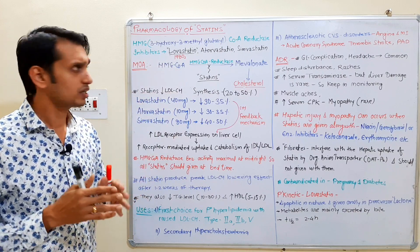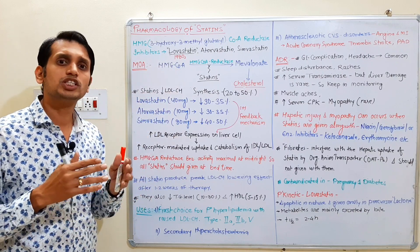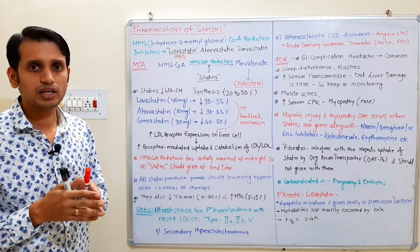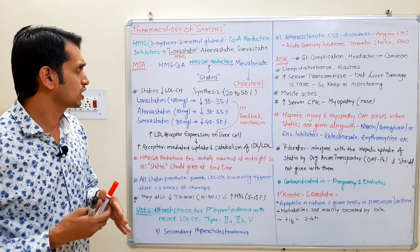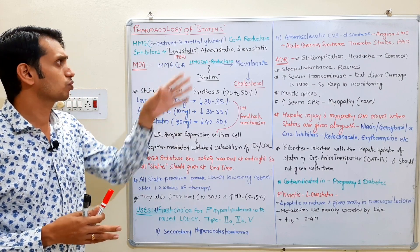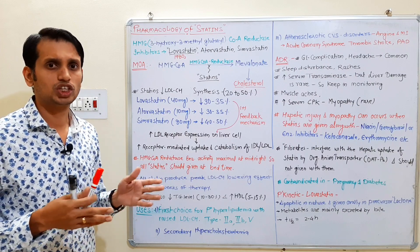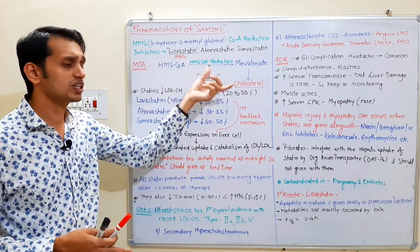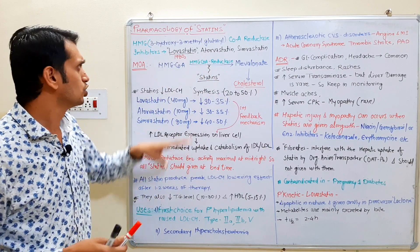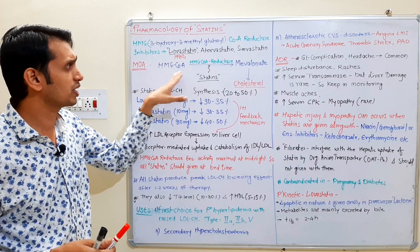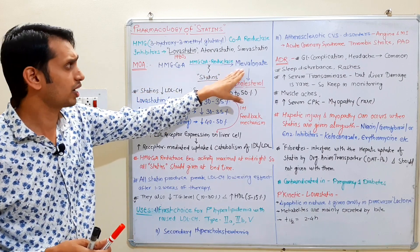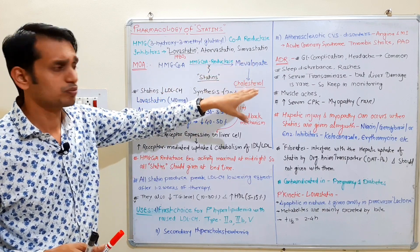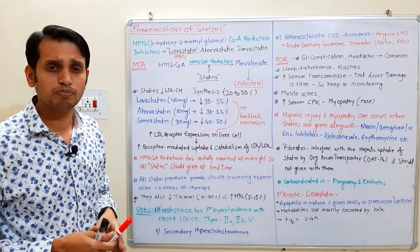HMG-CoA Reductase is the enzyme mainly responsible for the formation of cholesterol. This is the rate-limiting step of cholesterol synthesis. HMG-CoA is converted to cholesterol with the help of HMG-CoA reductase enzyme. This is the basic synthetic pathway.